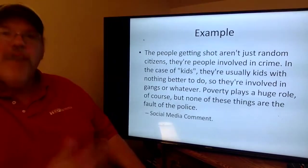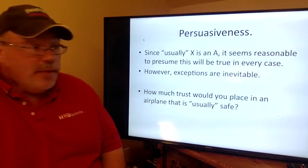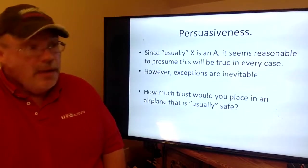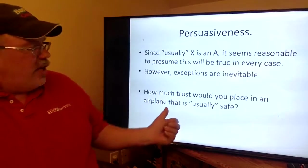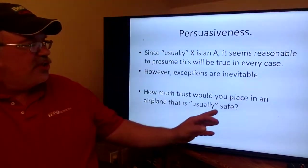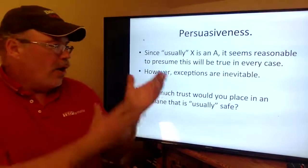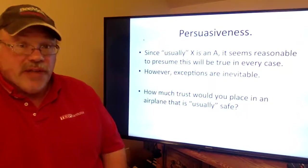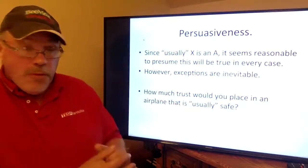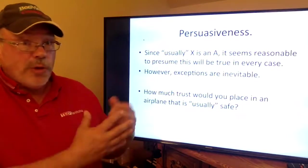We rely on going from usually to always quite a bit in ordinary life when there's not too much on the line. But if you say an airplane is usually safe, are you going to get on? Our standards for going from usually to always are contextual. In the case of police violence, police officers being usually pretty good is both true and not good enough — we want that to be universally true, not just usually true, even if the percentage of bad cases is incredibly small.